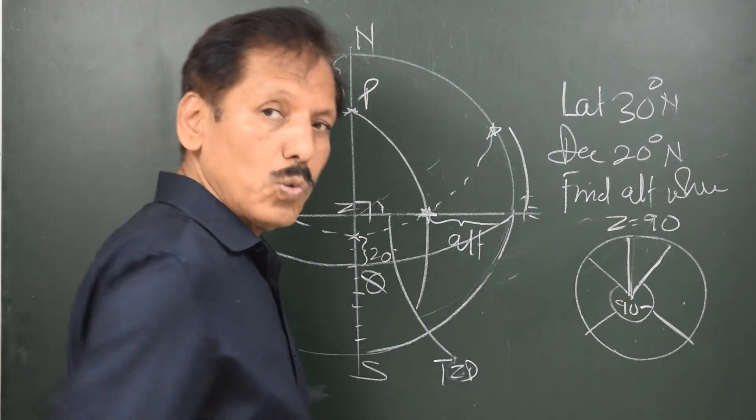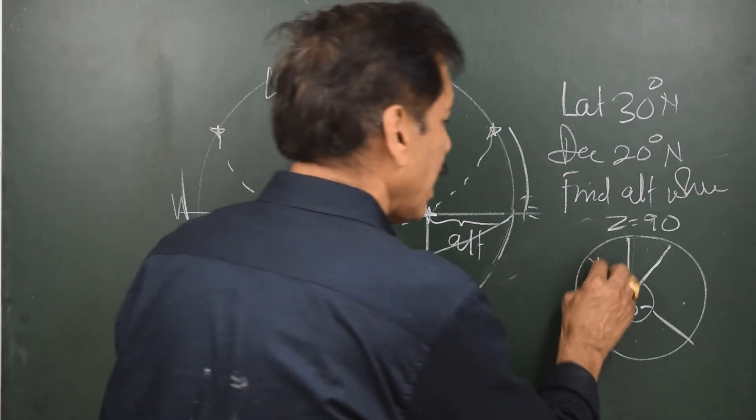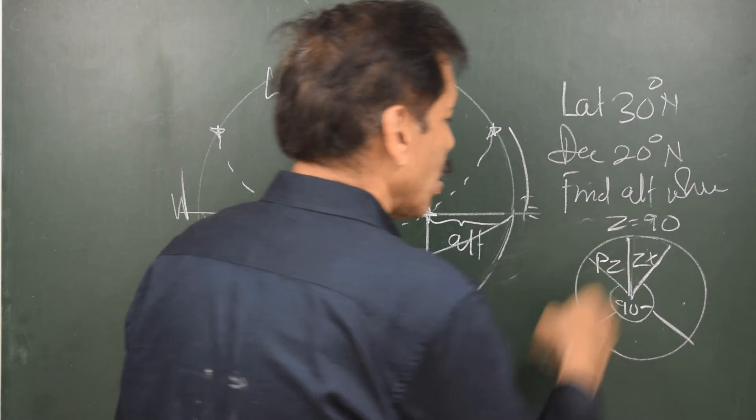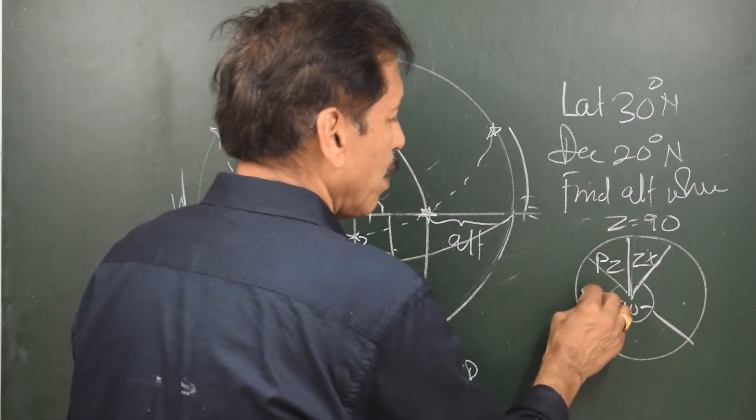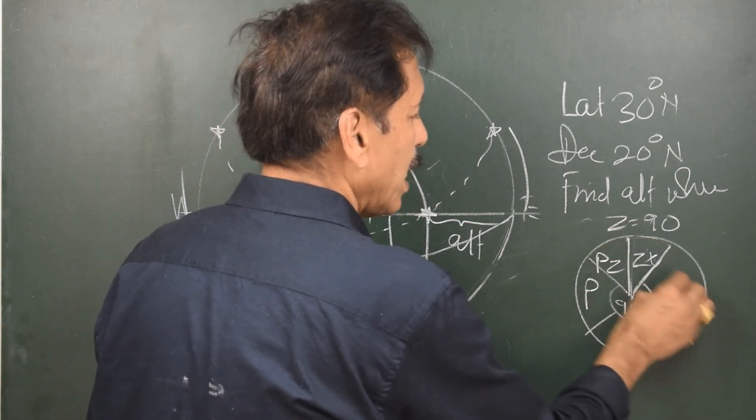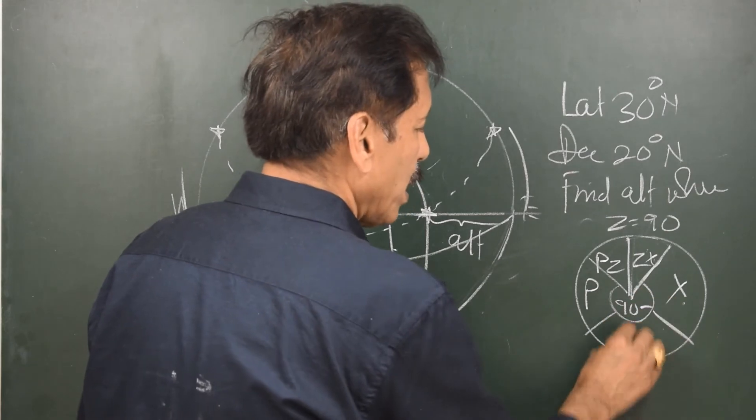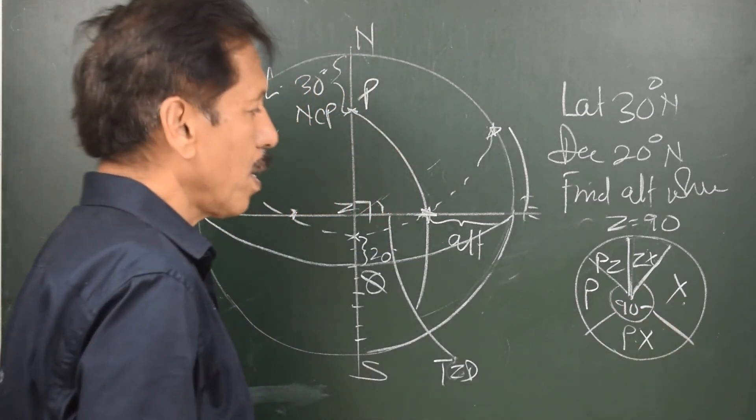So, I don't have to look at the triangle. So, what I have done is, I have written Z here. So, who is the neighbor of Z? Pz and Zx. Who is the neighbor of Pz? Z and P. Who is the neighbor of Zx? Z and X. What is the remaining Px?